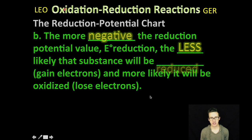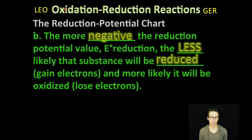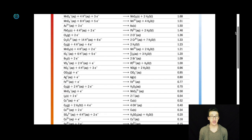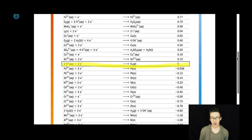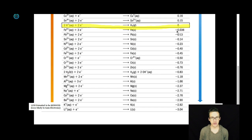The more negative the reduction potential, on the other hand, the less likely that substance will be reduced. The less likely it will gain electrons, and the more likely it will be oxidized. So now we're going to take a little stroll down the bottom portion of this chart, and notice our reduction potentials become negative.